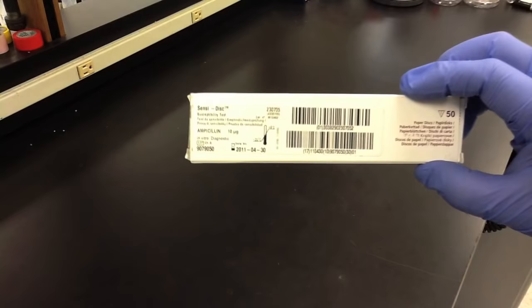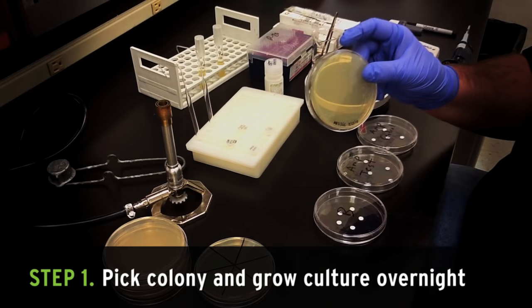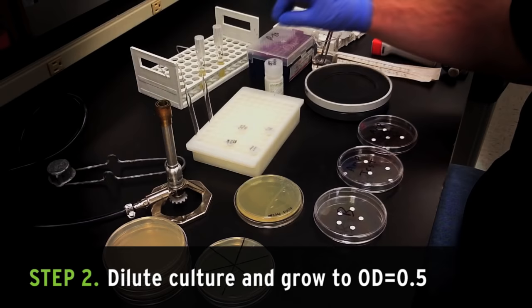We'll need two bacterial cultures, one that's susceptible to the antibiotic you're testing and one that's resistant. The day before you want to test, grab an isolated colony from a plate and grow overnight. The day of the test, dilute your cultures back and grow to about mid-log phase, around an OD of 0.5.